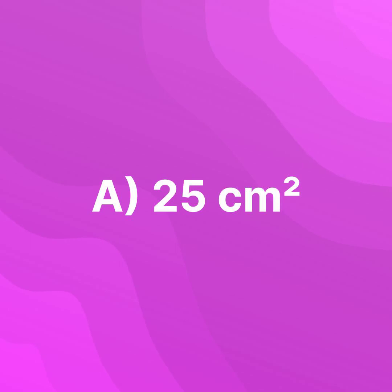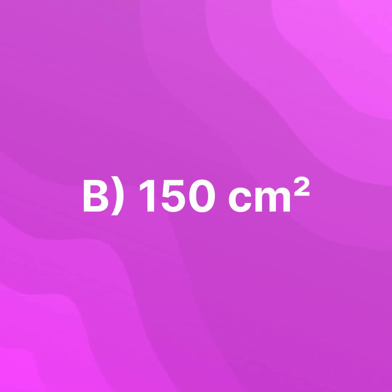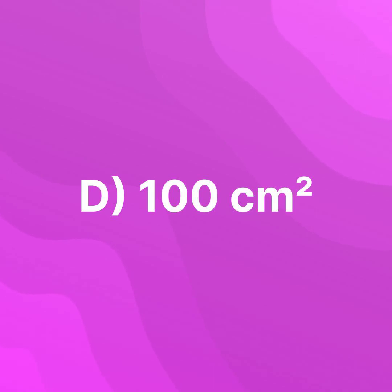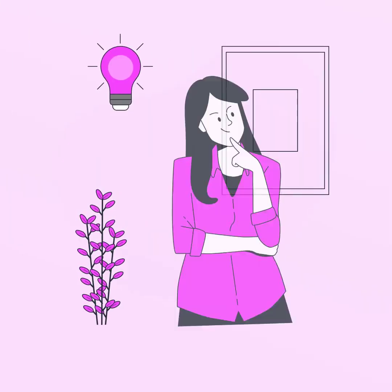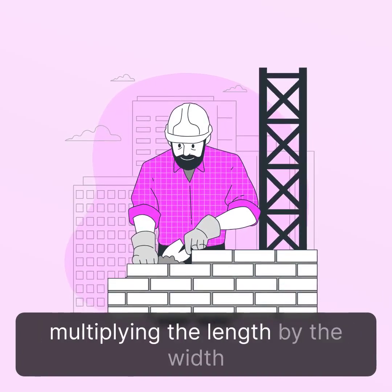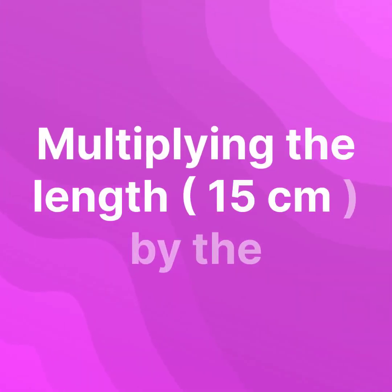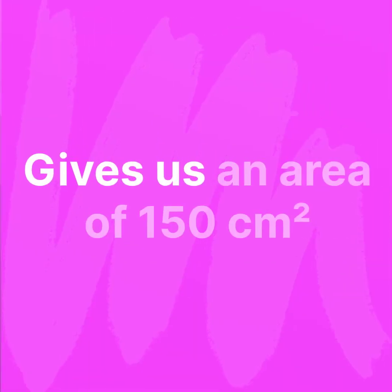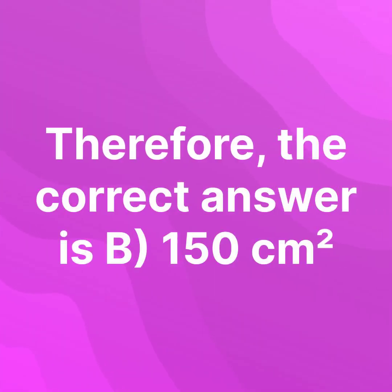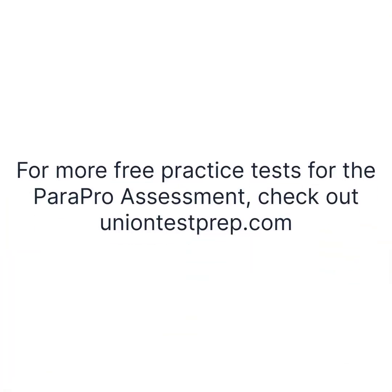A. 25 cm². B. 150 cm². C. 50 cm². D. 40 cm³. The correct answer is B. 150 cm². For more free practice tests for the ParaPro assessment, check out uniontestprep.com.